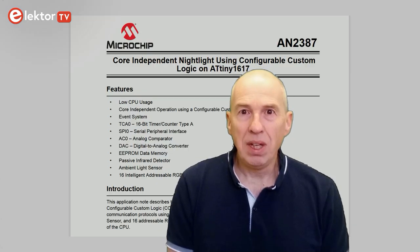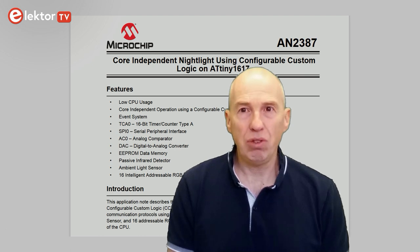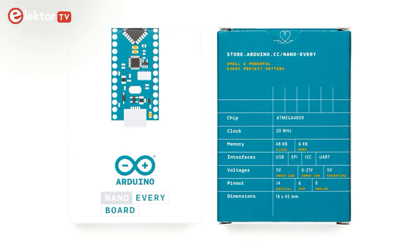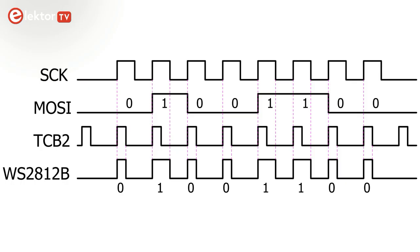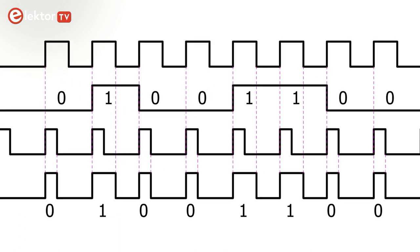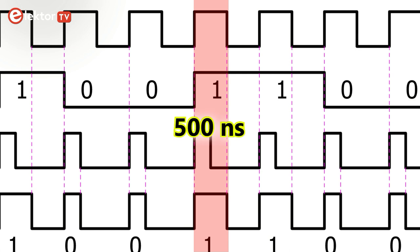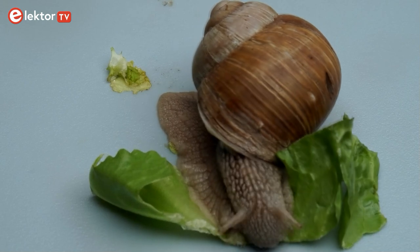However, there remains one last hurdle to overcome, which concerns the MCU's clock frequency. Note that the ATtiny1617 example runs from a 20 MHz clock divided by 2, so 10 MHz. According to the Arduino website and the Nano Every's packaging, its clock frequency is also 20 MHz. In reality, however, the Nano Every runs from 16 MHz, not 20. A 16 MHz system clock allows a SPI SCK signal of 1 MHz. In our setup, a Logic 1 signal for the WS2812B LED corresponds to one period of the SPI SCK signal. This has a 50% duty cycle, which is almost allowed by the specifications of the WS2812B if you take the tolerances into account. However, 1 MHz means a pulse duration of 500 ns, which is less than the minimum allowed pulse duration of 650 ns for the WS2812B.